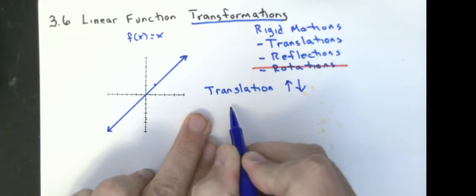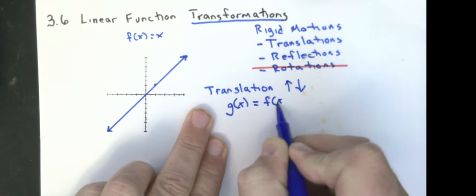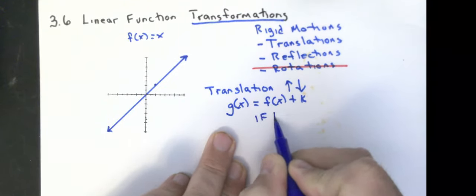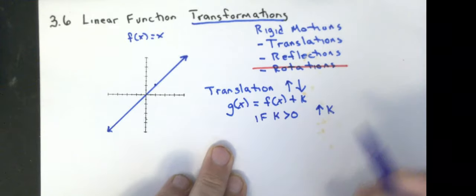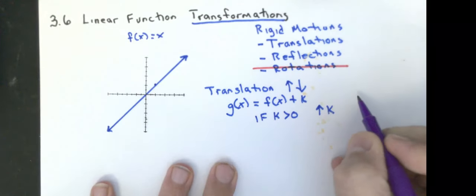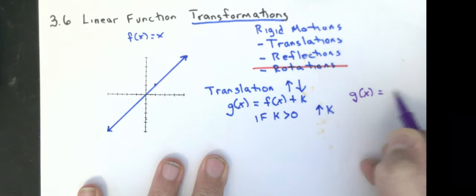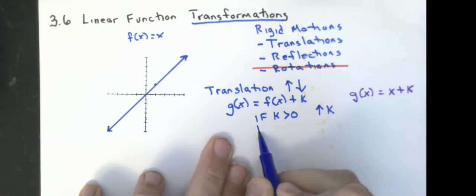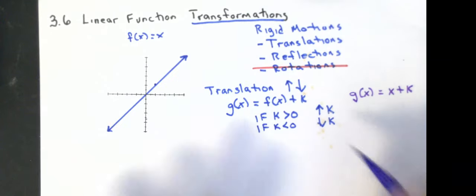So, if I say g(x), that's just another name for a function, is equal to f(x) + k. If k is positive, your graph is going to move up k units. And you can think about that in the terms of my f(x) is x, my g(x) in this case would be g(x) = x + k. That's going to move your y-intercept up k units. If k is less than zero, you're going to move down k units.